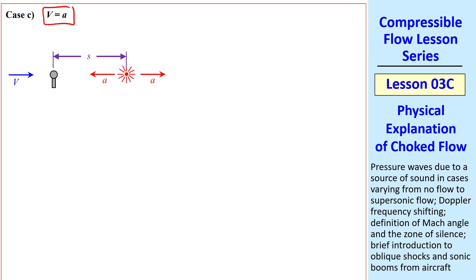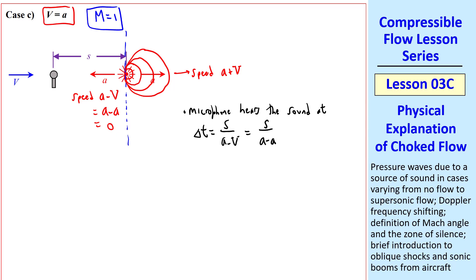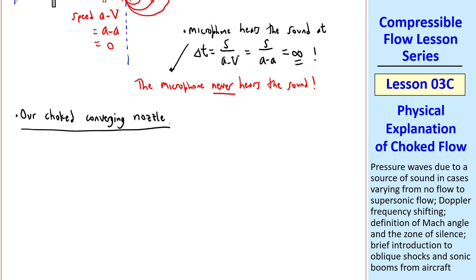Now let's consider the case where V is exactly equal to A. In terms of Mach number, Mach number is 1. The sound source is still putting out sound at speed A, but it's fighting against an equal speed V, pushing it to the right. So the sound waves, as soon as they're formed, they get swept downstream like this, with speed A plus V here to the right, and speed A minus V here, or zero, since V equal A. If I keep drawing these circles, they will all be tangent to this vertical line at the source. The microphone hears the sound at delta t equal S over A minus V, like previously, but this is S over A minus A, or zero, which gives us infinity. In other words, the microphone never hears the sound. The sound waves are swept downstream as fast as they're created. So the pressure disturbances from this sound wave never get to the microphone.